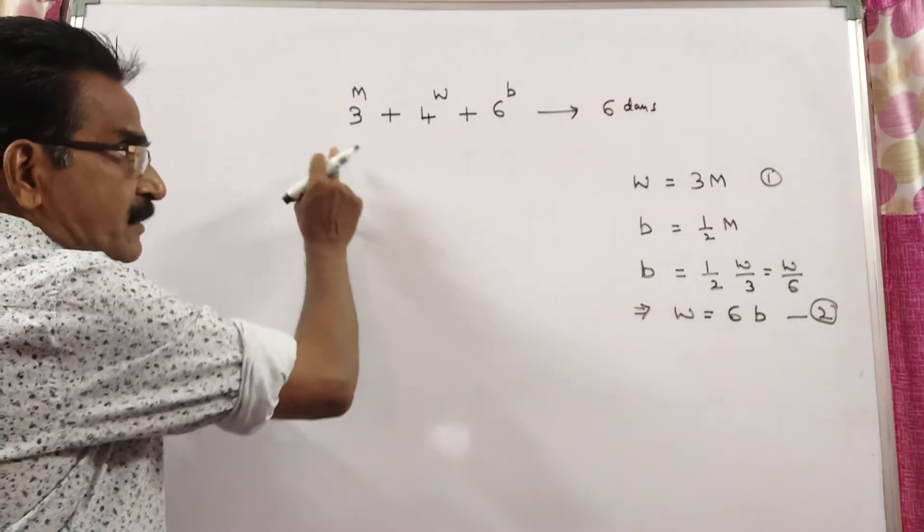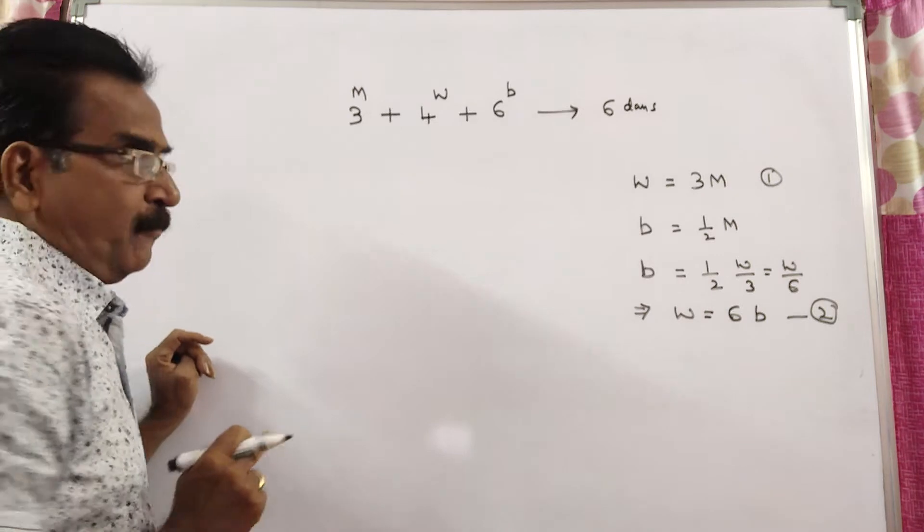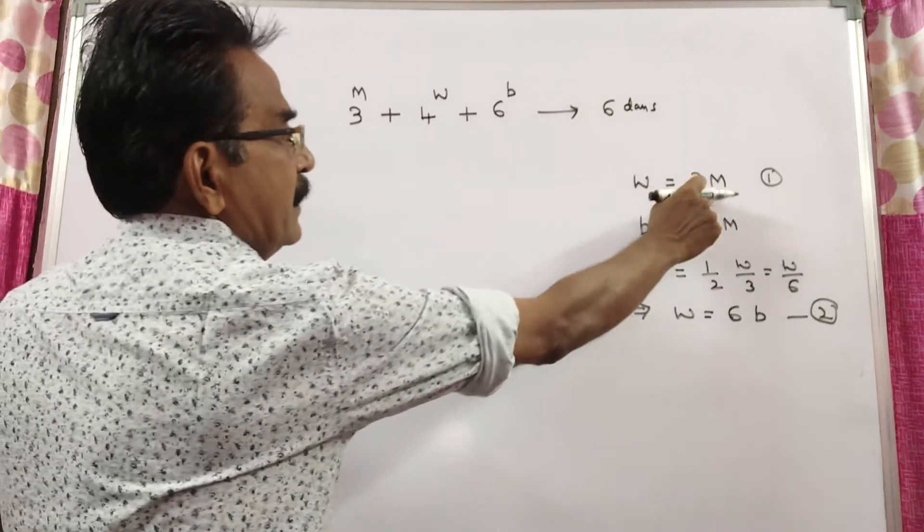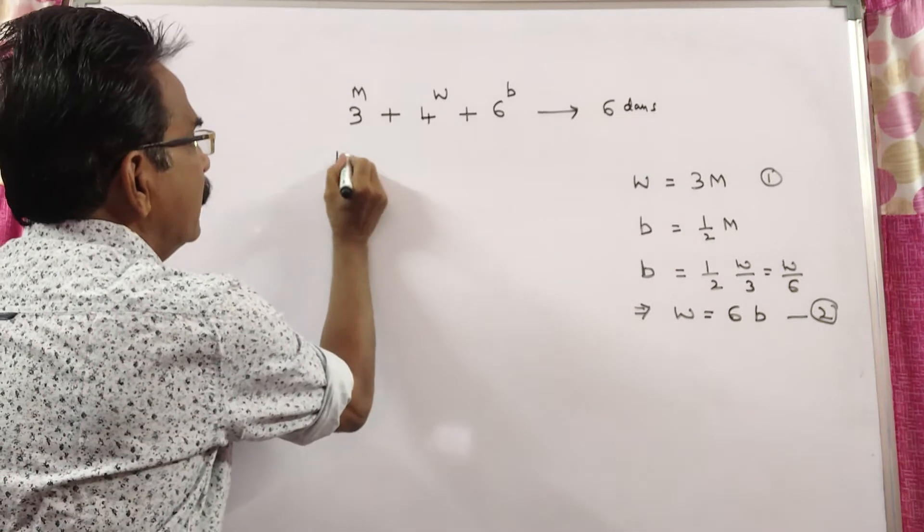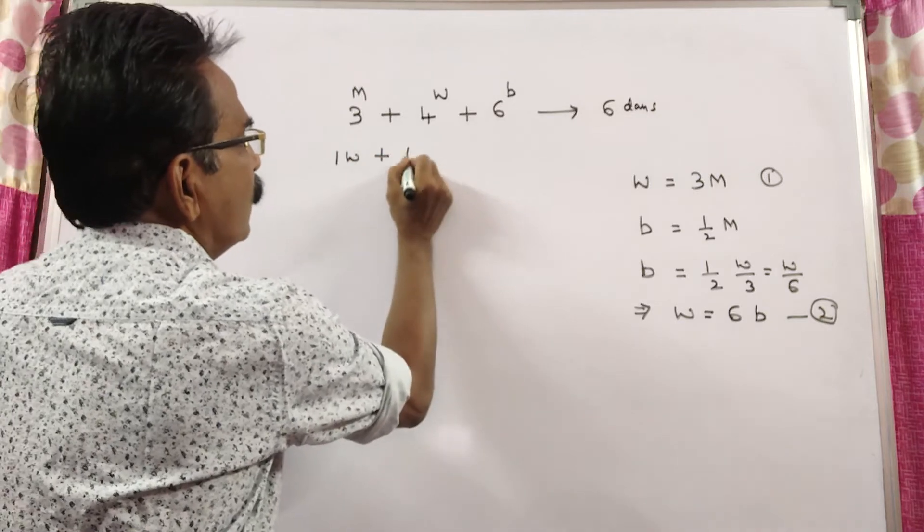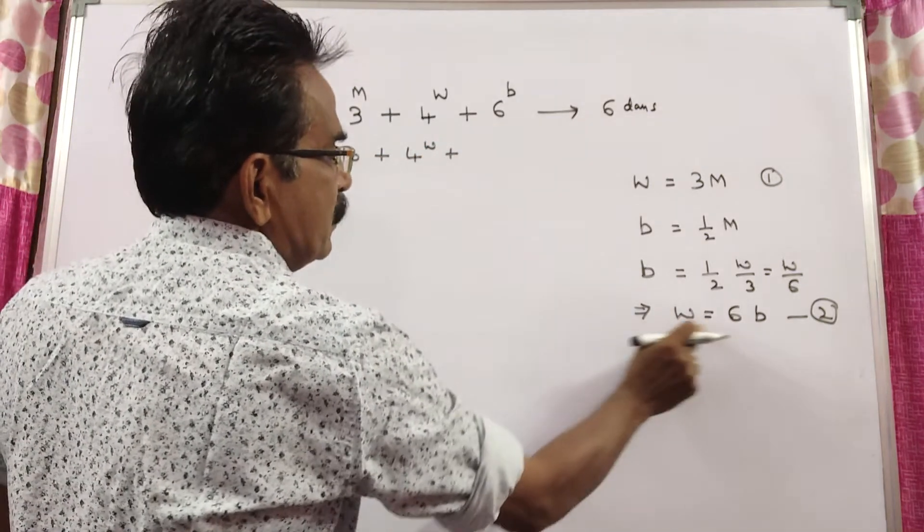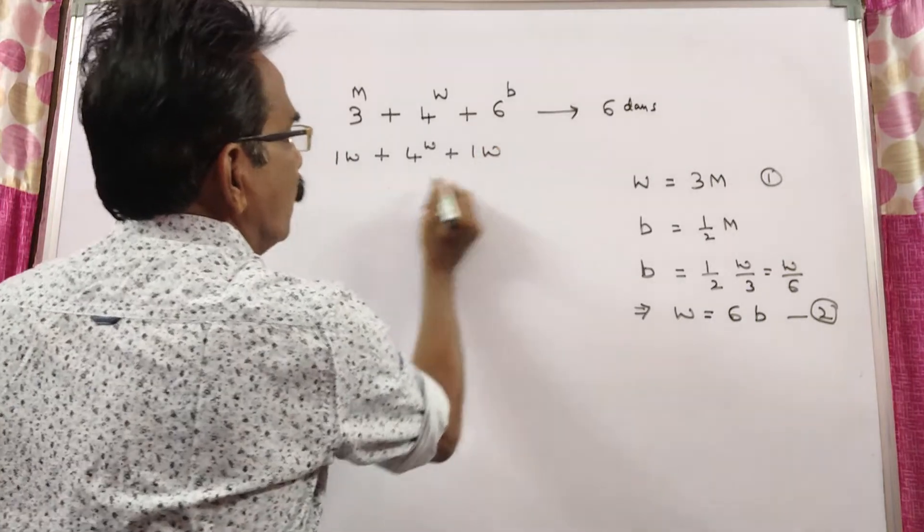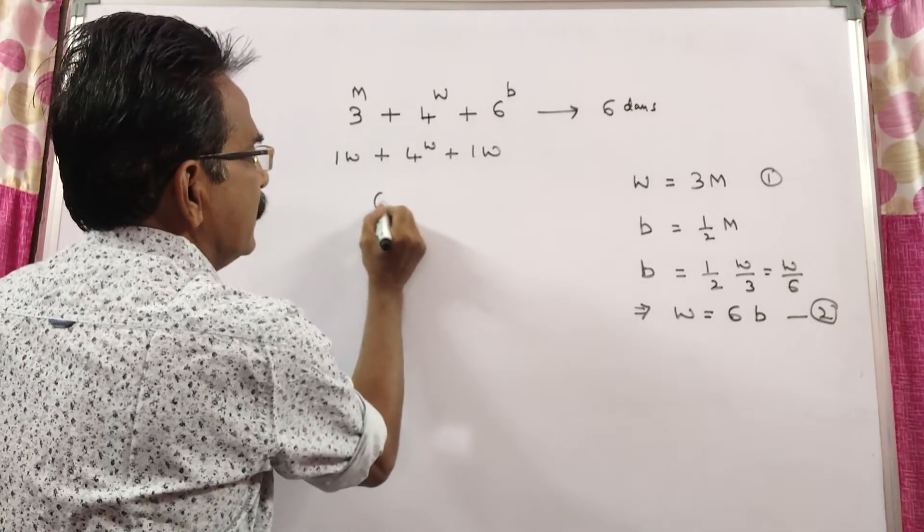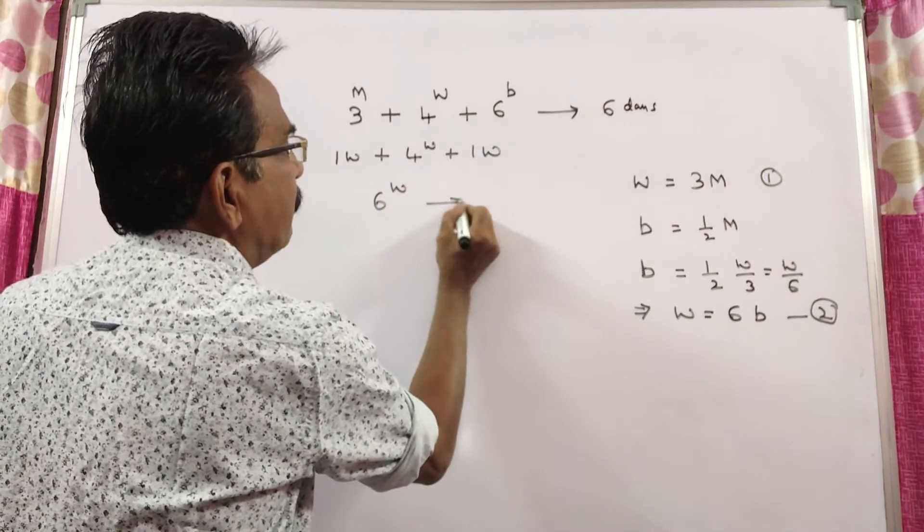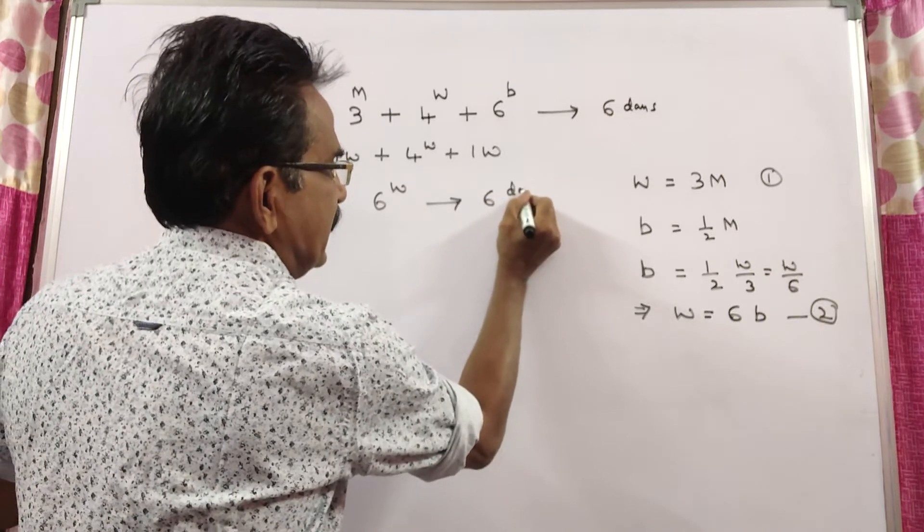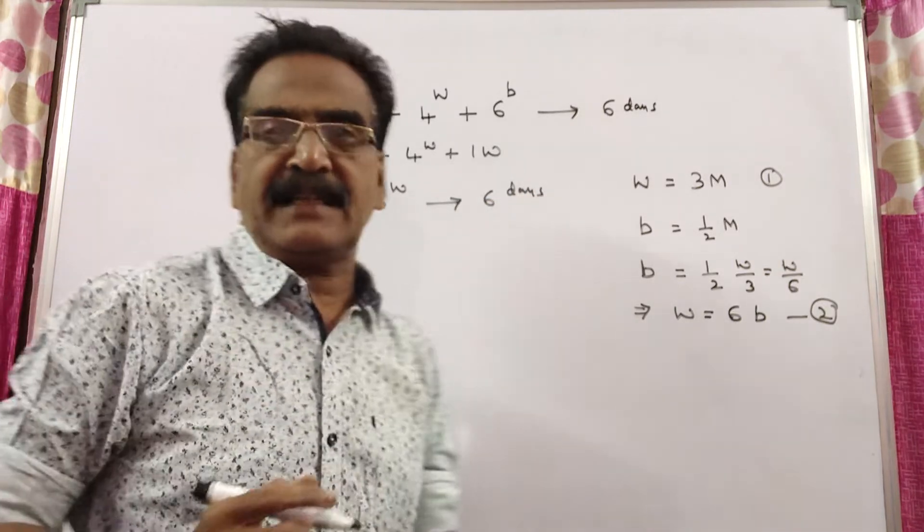So, now let us find the total number of women. See, 3 men is equal to 1 woman plus 4 women plus 6 boys is equal to 1 woman. Total 6 women. 6 women can complete a work in 6 days.